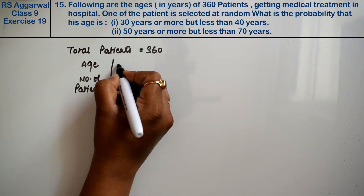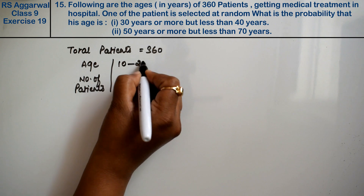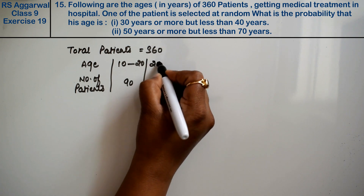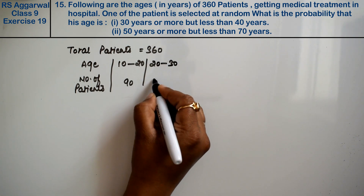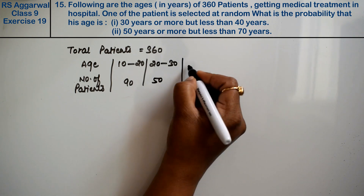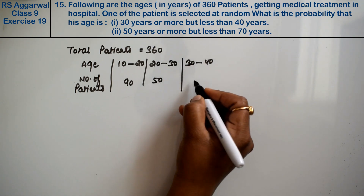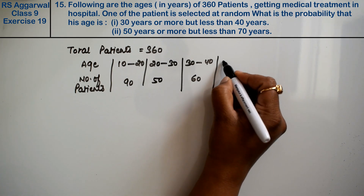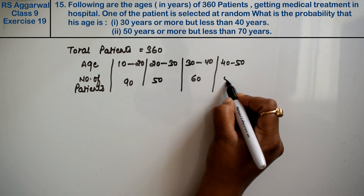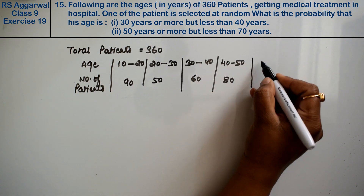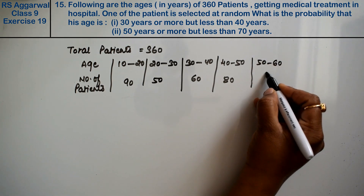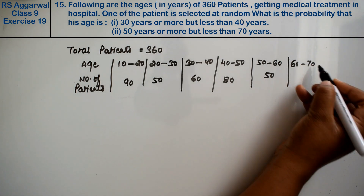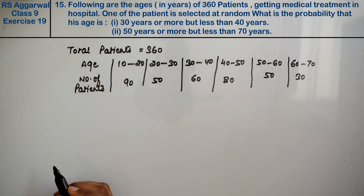The table shows: age 10 to 20 has 90 patients, 20 to 30 has 50 patients, 30 to 40 has 60 patients, 40 to 50 has 80 patients, 50 to 60 has 50 patients, and 60 to 70 has 30 patients.